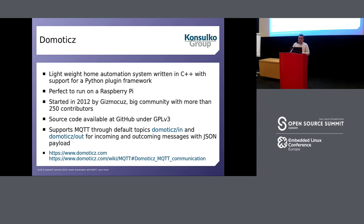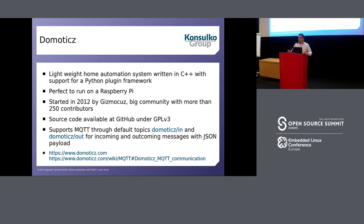Last but not least, Domoticz — another popular open source home automation platform written in C++, perfect to run on Raspberry Pi, started seven years ago with source code available on GitHub. However, the MQTT support in Domoticz is a bit more tricky because basically you have two default topics: 'domoticz/in' and 'domoticz/out'. This is how Domoticz communicates with all devices over MQTT. Compared to the other two examples already reviewed, I don't think this is as convenient, but they have good documentation you can check for details.